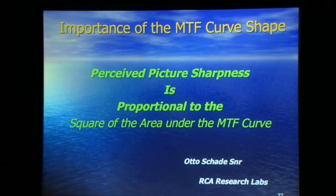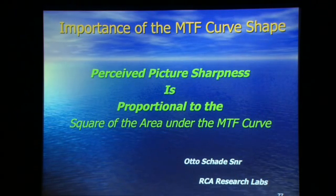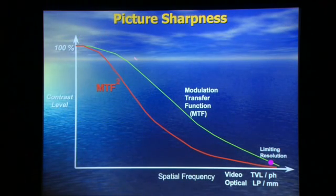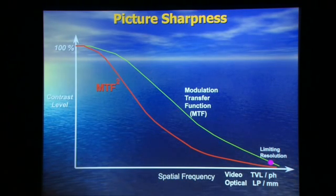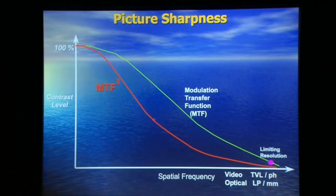I'm going to give it to you verbally first — you're going to scratch your head and say, what the heck does that mean? That what you see — when your eye and brain look at a screen some distance away — is proportional to the square of the area under the MTF curve. Let me explain it. Here's your MTF curve — that could be a lens or a lens multiplied by a camera. You squared it. What that means is: I take the 90% point — 90 by 90 is 81. 70 by 70 is 49. I just do a mathematical square of the curve.